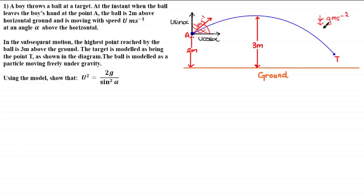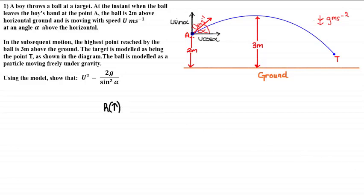We also have the acceleration acting downwards due to gravity of g meters per second squared. The reason we've chosen g as opposed to 10 or 9.81 is because we can see there's a g in the equation we're trying to prove. Now looking at the equation we need to prove, it's in terms of sine alpha. Since sine alpha appears as part of the vertical component of initial velocity, it makes sense to consider the vertical motion and resolve the vectors vertically.